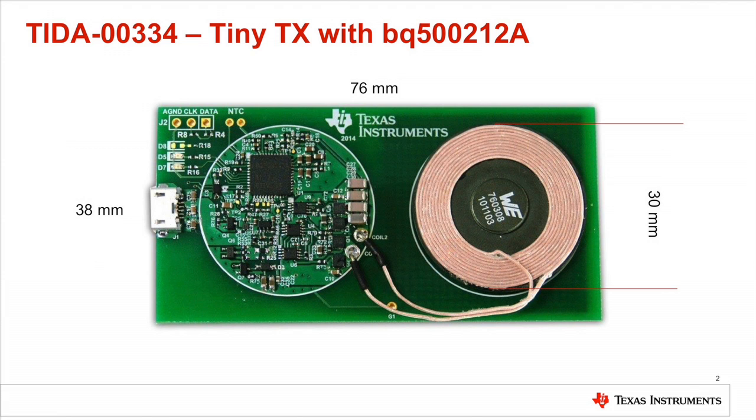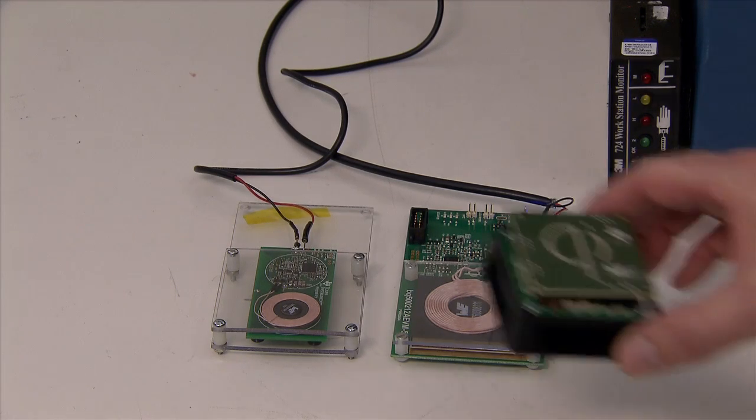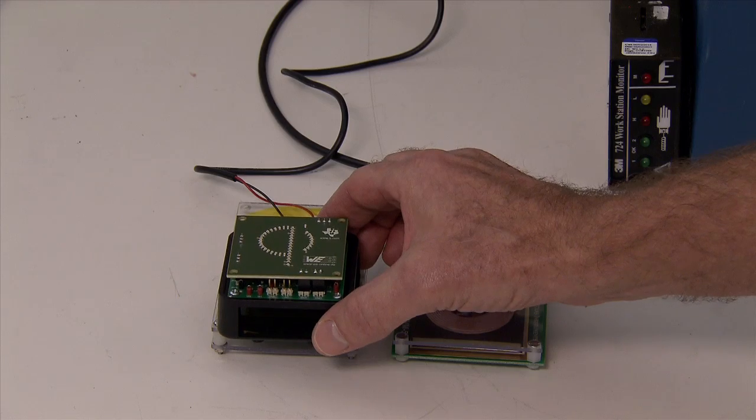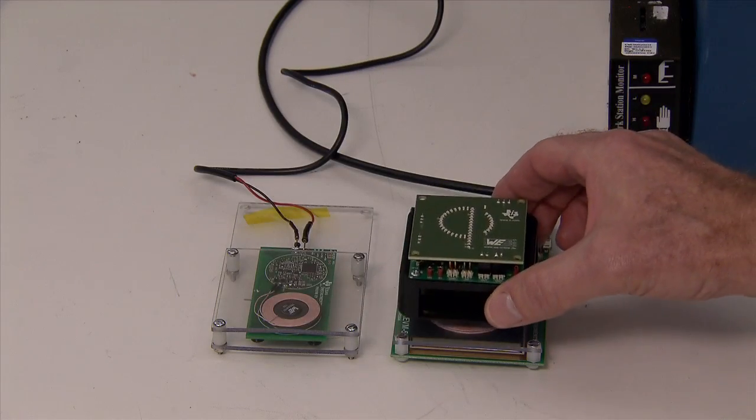However, since it's not a standard sized coil, it can't be certified. You can see here that a standard BQ51013B EVM-764 will run quite well on both the Qi compatible transmitter and the Qi compliant transmitter.